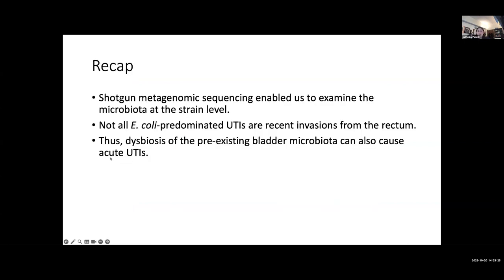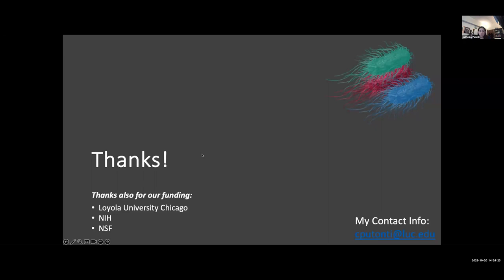Just as a recap here, shotgun metagenomic sequencing has enabled us to look at the microbiota at the strain level. This is a project that we worked on for over two years because we did a lot of fumbling around to figure out how best to try to pull out strain level variants within a given urobiome sample. Based upon our results, we can confidently say that not all E. coli predominated UTIs are recent invasions from the rectum. We have instances in which the strains found in the rectum do not very closely resemble those found in the bladder. This observation really fits into some previous hypotheses that dysbiosis of pre-existing microbiota in the bladder can also cause acute UTIs and symptoms. I'll just end saying thank you to you all for being here and listening, and also thanks to the people who gave me money.